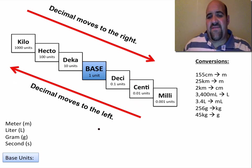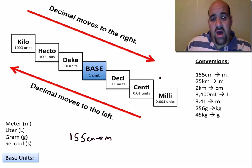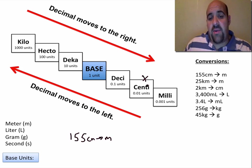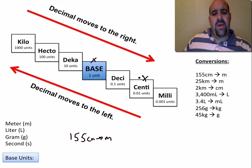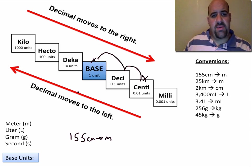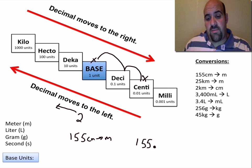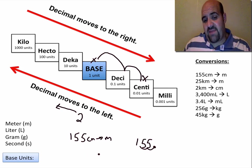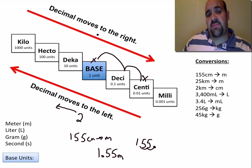The first example: we want to convert 155 centimeters to meters. Centimeters are here, and meters is a base unit, so we're ending there. We go up one, two steps. We went up two steps, so the decimal moves two places to the left. 155 has an assumed decimal here, so it moves over one, two places — 155 centimeters is 1.55 meters. You just count the number of steps and move the decimal in the appropriate direction.